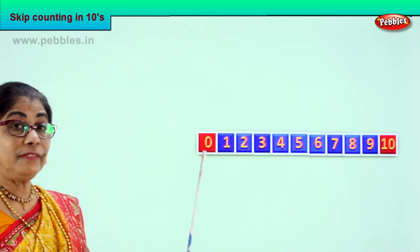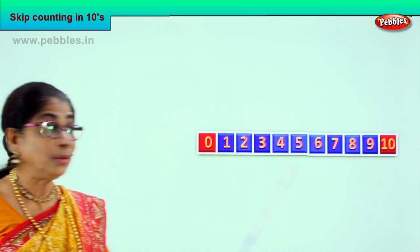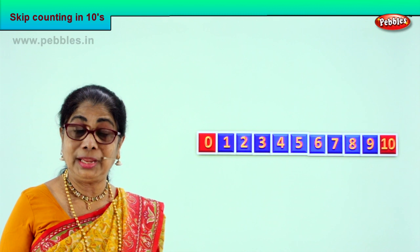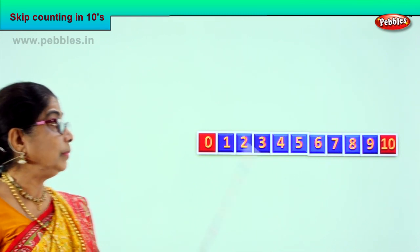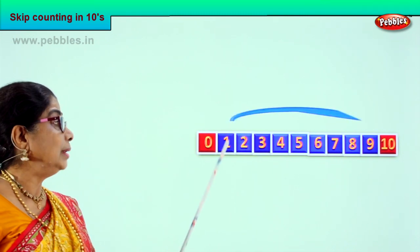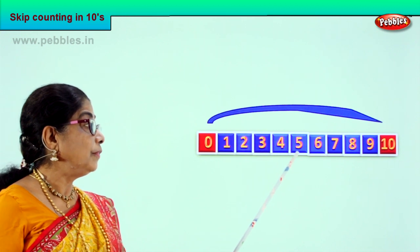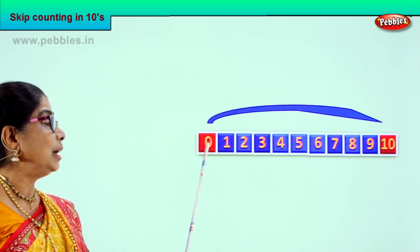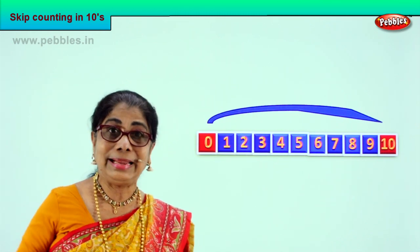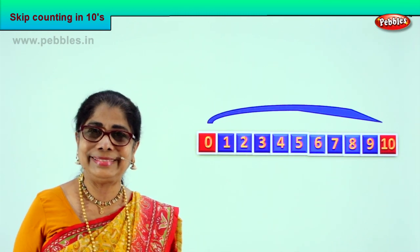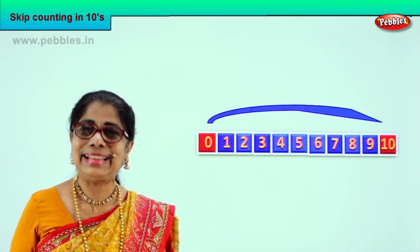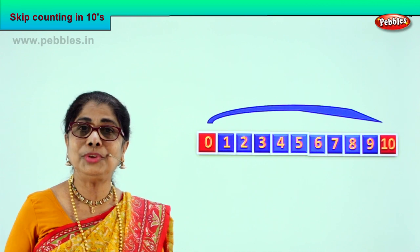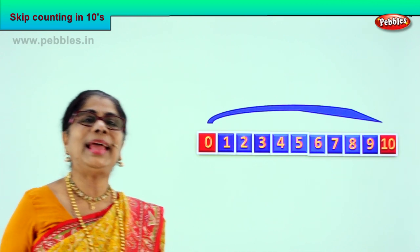Here we are. We have numbers zero to ten. Skip counting — how do we do the skip counting? Zero, one, two, three, four, five, six, seven, eight, nine, ten. So we jump from zero to ten. That is ten — one ten. So up to hundred, how many times do you have to jump? We're going to look at that.